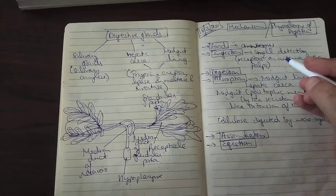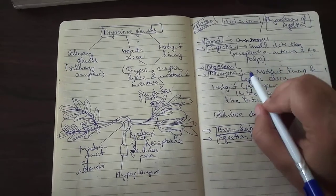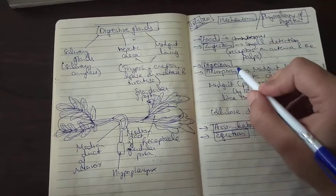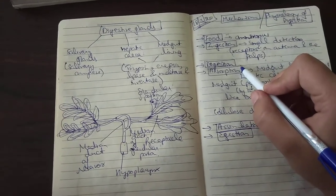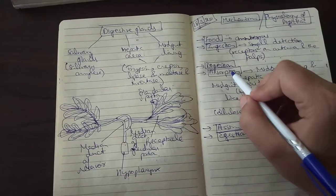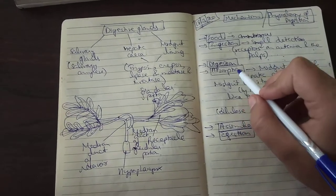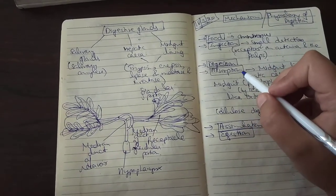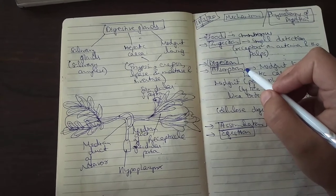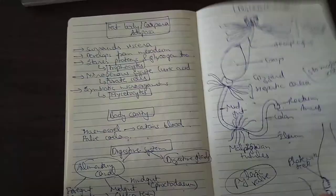Some of the starch has been converted into simple sugars and the rest will be digested in this third step, which occurs in the crop and in the midgut region. Once the food reaches the crop region, the crop receives enzymes from the midgut region through the gizzard for the digestion of some fats and proteins.